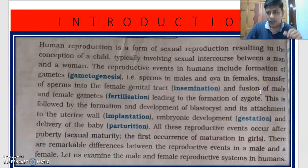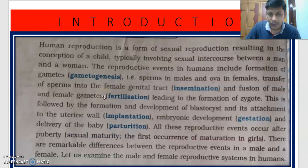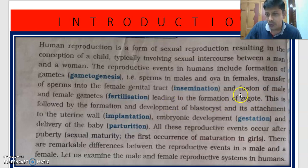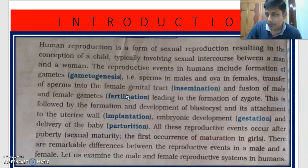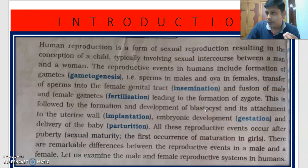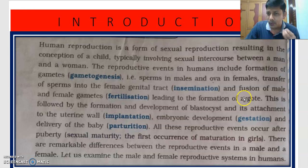The third step is fusion of male and female gametes, that is called fertilization or syngamy, leading to formation of a diploid zygote. Both gametes are haploid, consisting of 23 chromosomes each. That results in formation of a zygote which consists of 46 chromosomes, that is 23 pairs.